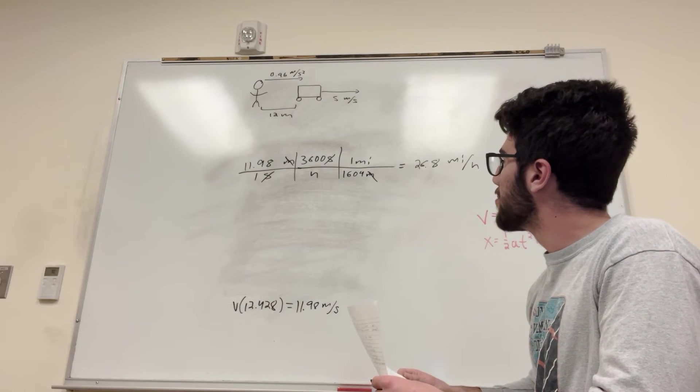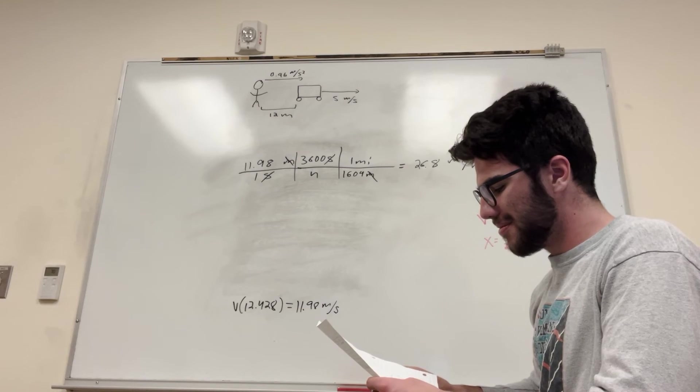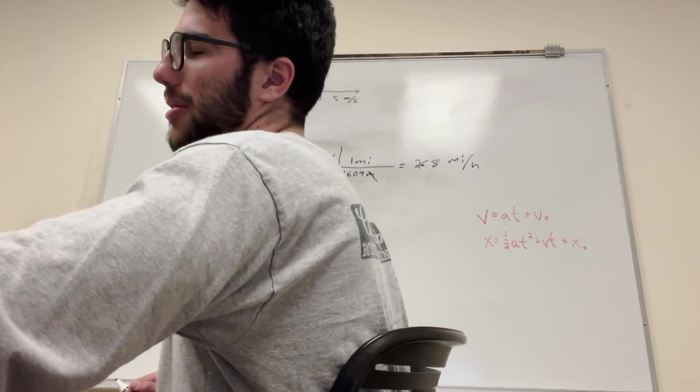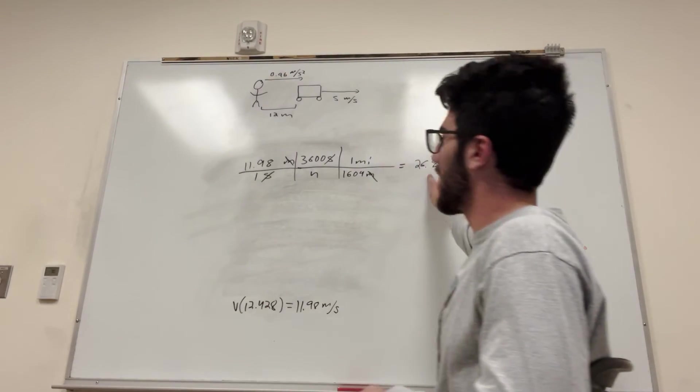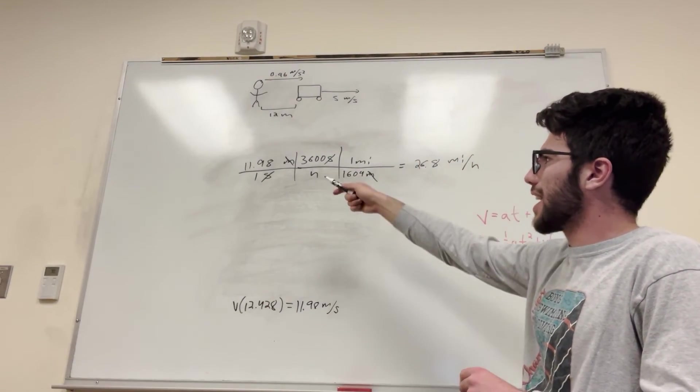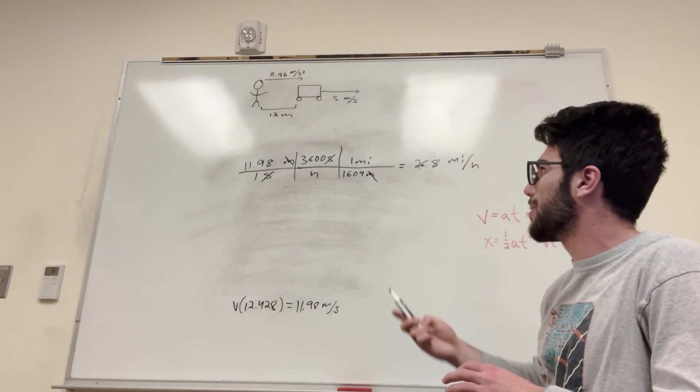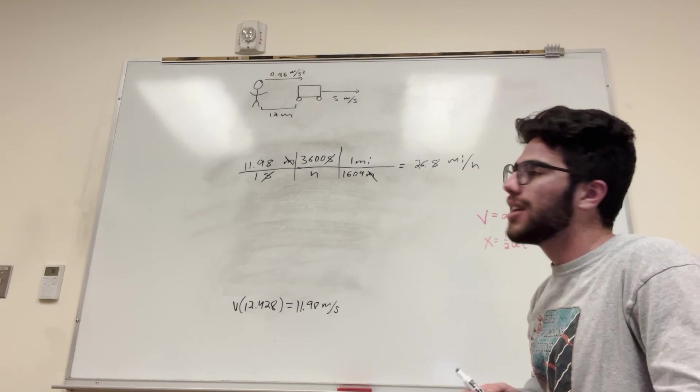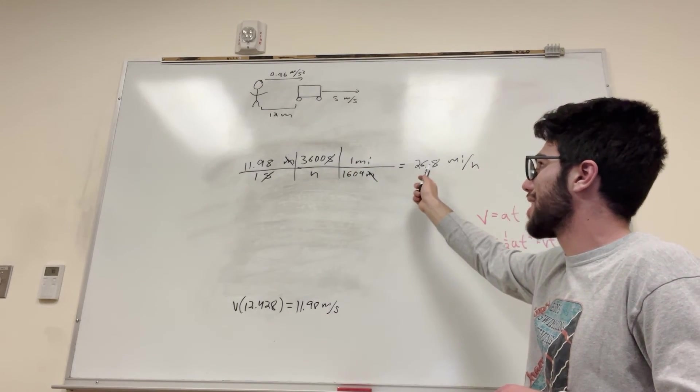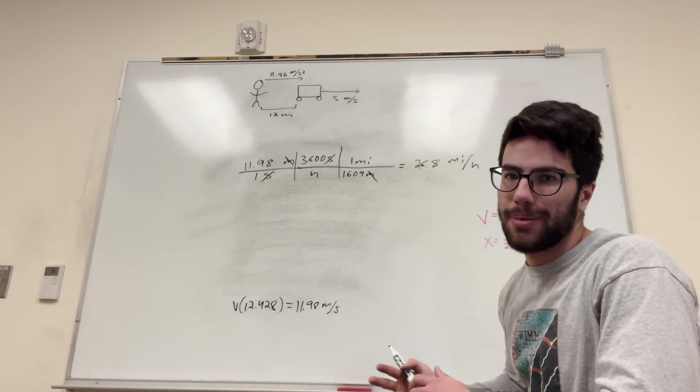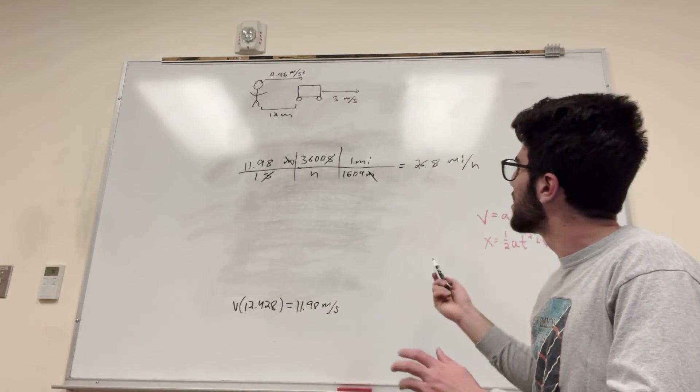Cool trick if you want to convert meters per second, if you want to check your answer: multiply it by 2 plus a little bit and it's going to give you roughly miles per hour. So 11.98 times 2 is roughly 26.8, it's a little wrong but that's just how you can check your answer, make sure you're kind of on the right track.